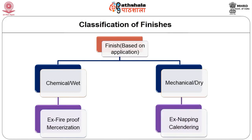Mechanical finish, also called dry finish, involves application of physical treatment — friction, pressure, temperature and tension — to the surface of the fabric using machines. Napping, shearing and calendaring are some examples of mechanical finishes. These finishes are either temporary or semi-durable and do not last long.